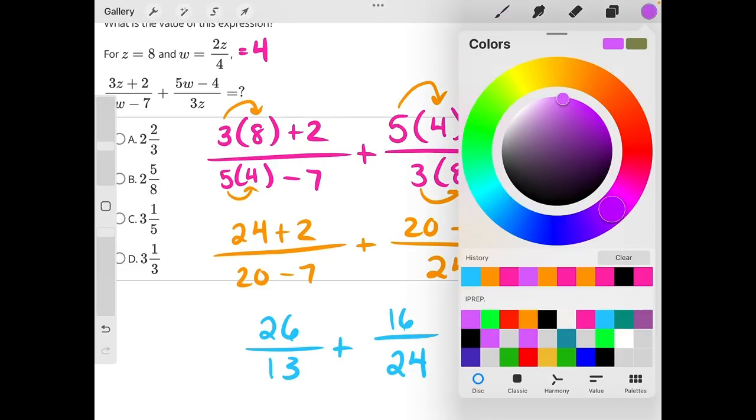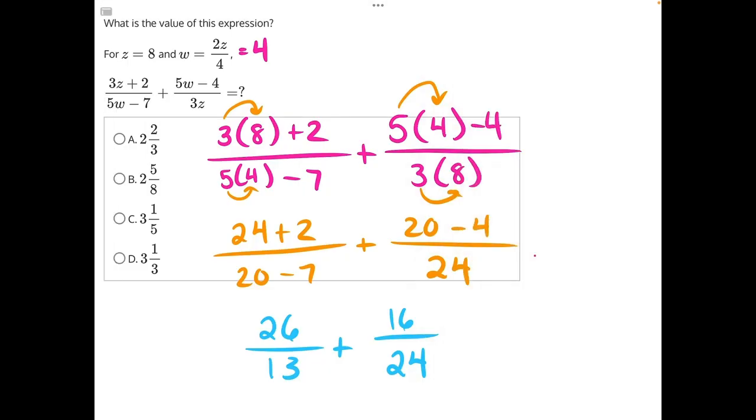Now we must simplify these fractions. 13 can go into 26 exactly 2 times. So this fraction simplifies down to the whole number 2.